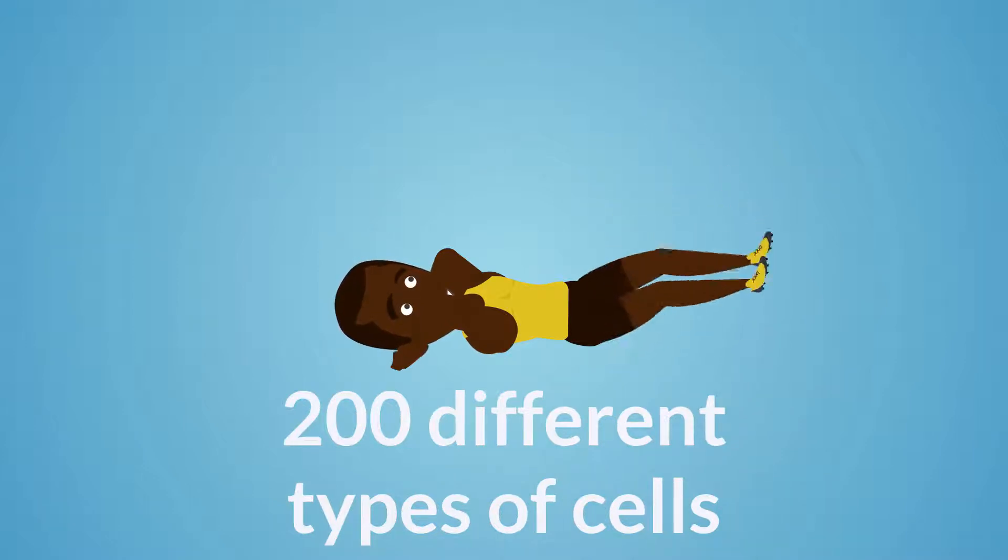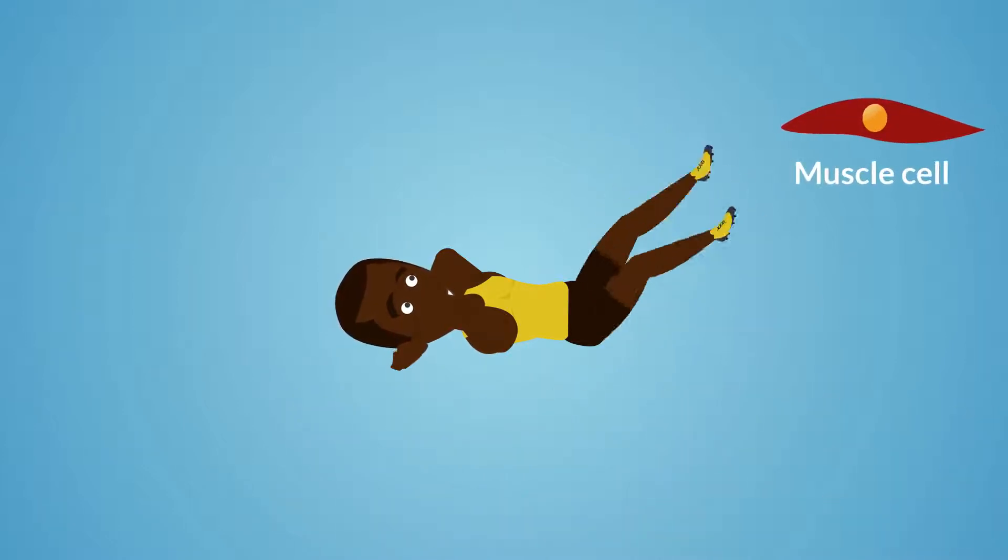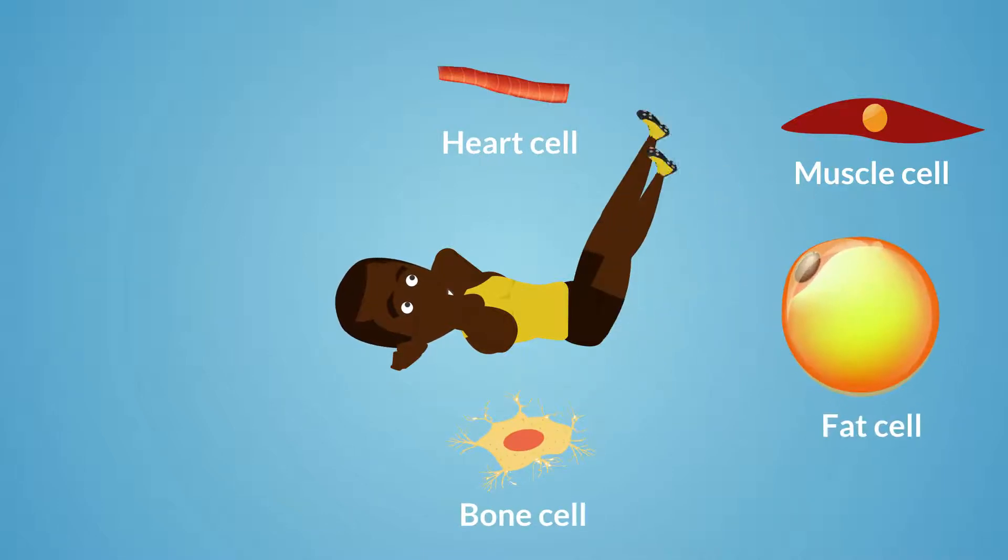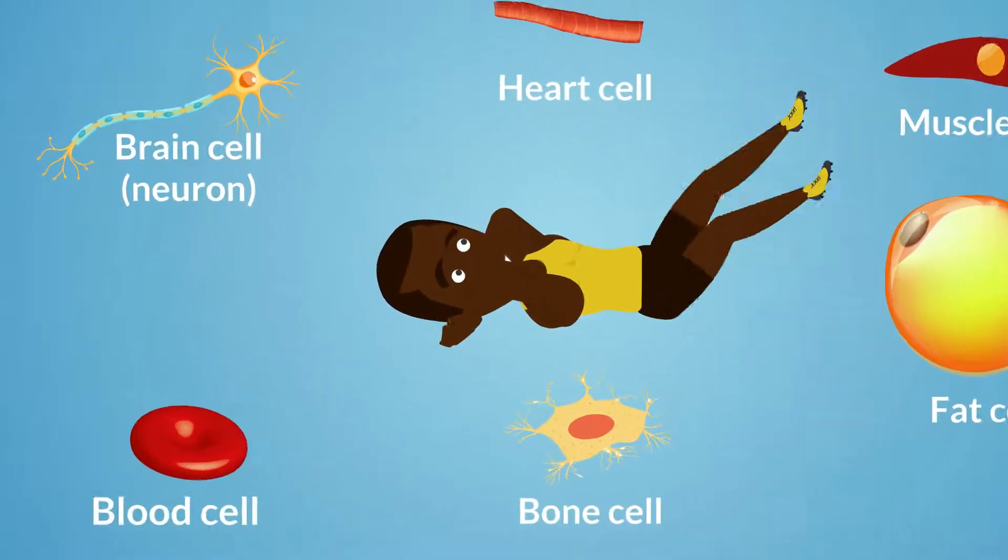Cells look very different depending on their job. There are 200 different types of cells which make up different parts of your body: heart cells, bone cells, fat cells, brain cells, or blood cells.